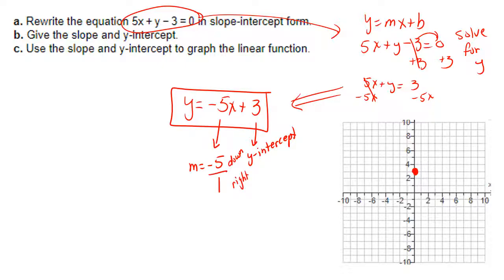Watch me demonstrate. Count down 1, 2, 3, 4, 5 units. Then count over to the right 1 unit. And you place your second point right there. After going down 5 units from the y-intercept and then over to the right 1 unit.